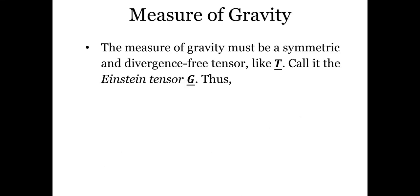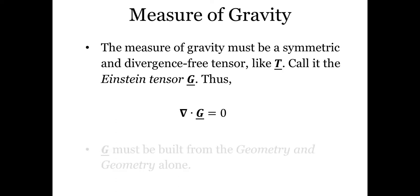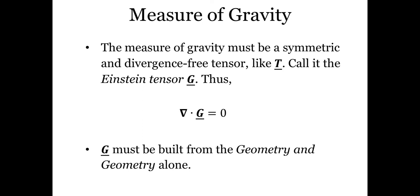Now we have a measure of the source; we also need a measure of gravity. There will be a check and balance: the source generates gravity, and gravity impacts the distribution of the source. The quantity that defines the geometry of space-time will also have to be, like T, a symmetric and divergence-free tensor. We shall call it the Einstein tensor G. Since it must be symmetric and divergence-free, the divergence of G must be zero. Since G characterizes the geometry of space-time, G will have to be built from the features that codify the geometry, and from nothing else.